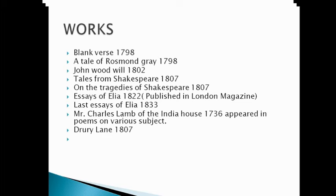When we talk about Charles Lamb's work, an important work is Lyrical Ballads, written in 1798. It was a very important work in English literature. Lyrical Ballads was written by William Wordsworth in collaboration with Samuel Taylor Coleridge. Charles Lamb, William Wordsworth, and Samuel Taylor Coleridge were common friends, and Coleridge and Charles Lamb were lifelong friends.